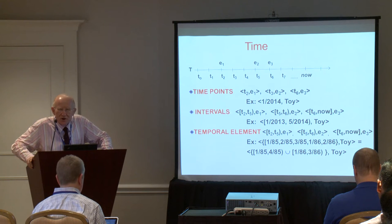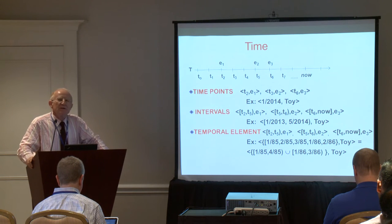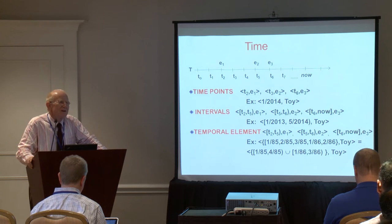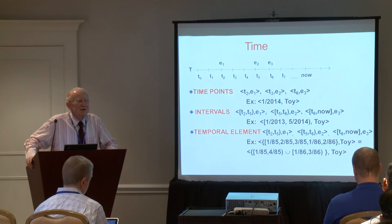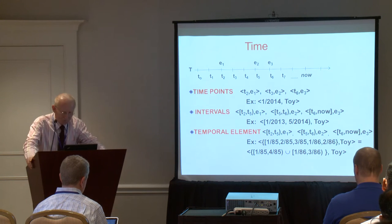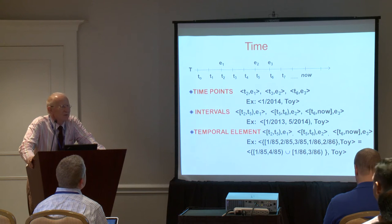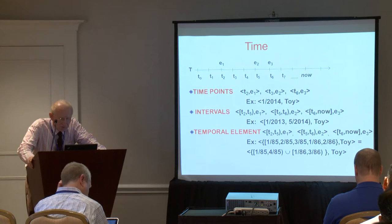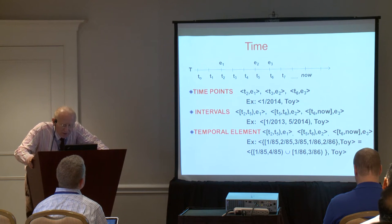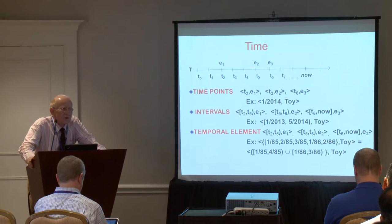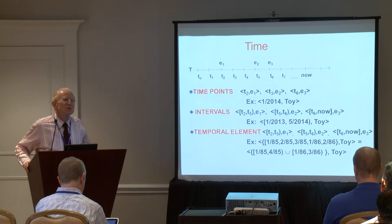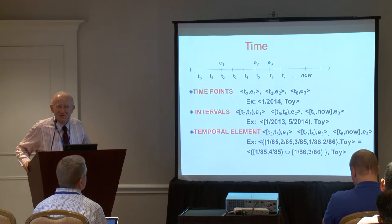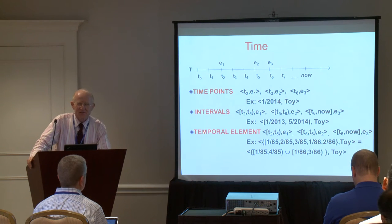Our intuition says events occur at time instances — for instance, an employee started working in the toy department on 1/2014. This is intuitive but incomplete for capturing temporal reality. A better solution is using time intervals designated by a lower and upper bound. For example, the employee in the toy department worked from 1/2013 to 5/2014 — a compact and complete representation.